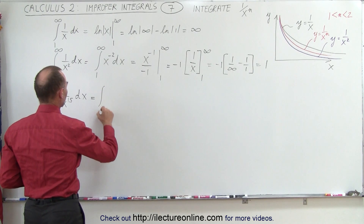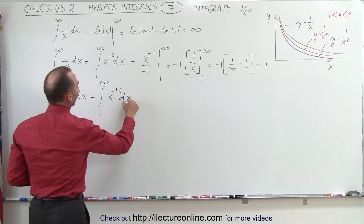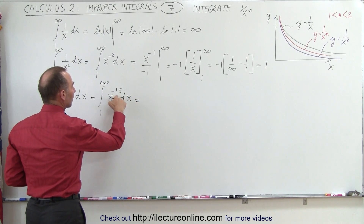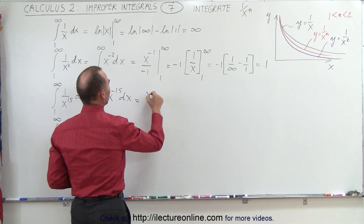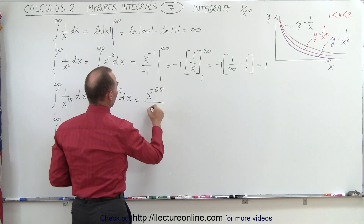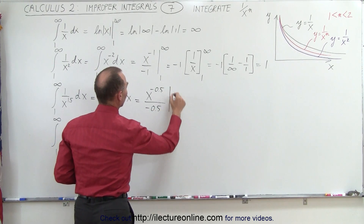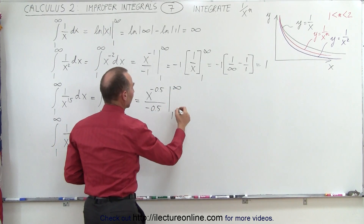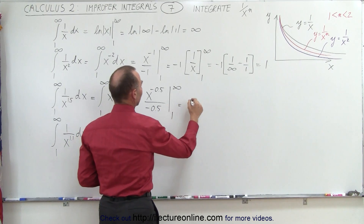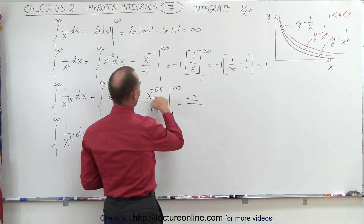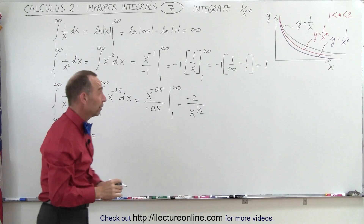It's the integral from 1 to infinity of x to the minus 1.5 dx. When we integrate, we add 1 to the exponent and divide by the new exponent, so this becomes x to the minus 0.5 divided by minus 0.5. Rewriting that, this is the same as negative 2 in the numerator — negative 2 divided by x to the 1.5 power, which is basically the square root of x.